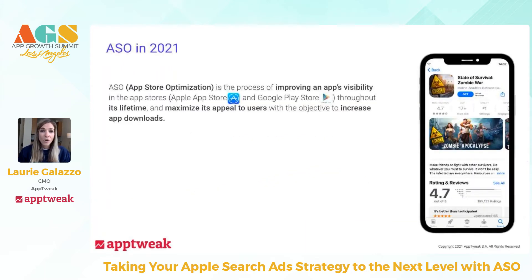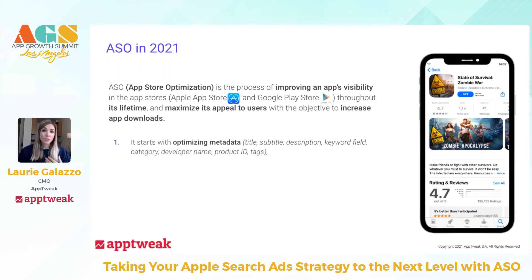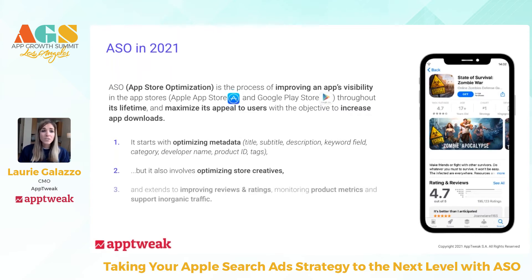Let's get started with ASO in 2021. It's still the same process — you want to continue updating your app product page to improve its visibility over its lifetime. This is clearly an ongoing process requiring many iterations and updates every month if possible. The goal is to maximize the appeal of your app page to store users in order to increase your downloads. It starts with optimizing your metadata including your title, subtitle and keyword field, but it also involves store creatives — an important aspect we'll tackle today. ASO also extends to improving your reviews and ratings, monitoring product updates, and supporting inorganic traffic.